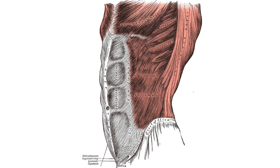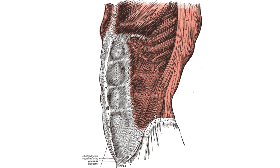We're going to start with the abdominal muscles, looking from superficial to deep. The very first one is the rectus abdominis — the one we're most familiar with, our six-pack muscle. Off to the side, the external obliques interdigitate with the serratus anterior. So we have the rectus abdominis and the external obliques, which are going to be the most superficial.